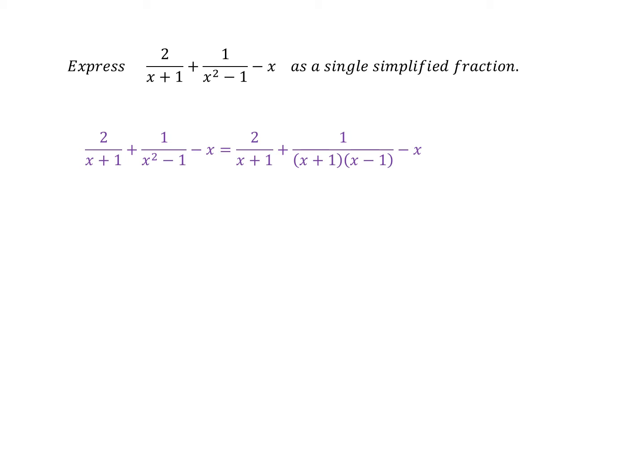Now in terms of trying to combine these, we want a common denominator. We could multiply the two denominators together to get a common denominator, but if we did that we'd be repeating the x plus 1. So instead, I'm simply going to use x plus 1 times x minus 1 as the common denominator.